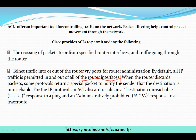When the router discards a packet, some protocols send a special packet to notify the sender that the destination is unreachable. For the IP protocol, an access list discard results in a 'destination unreachable' response to ping, and an 'administratively prohibited' response to traceroute. If we are trying to ping or reach that destination it will return destination unreachable, and if we try traceroute we will get that response.